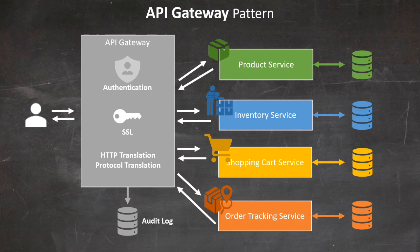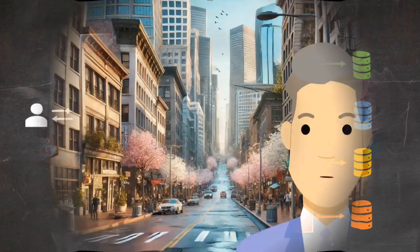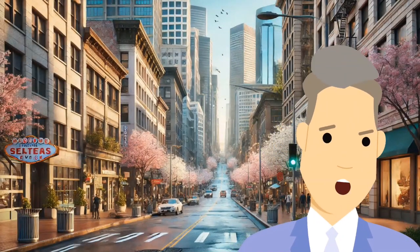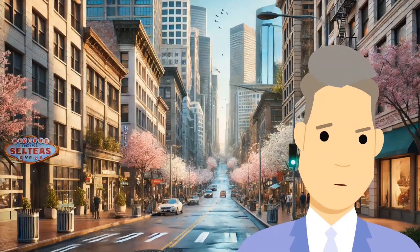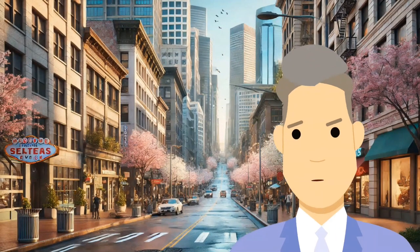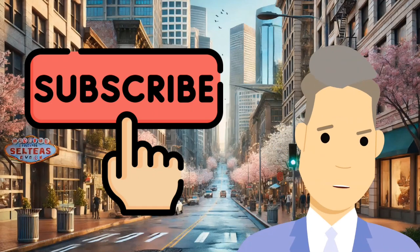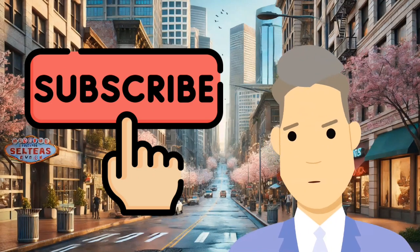If you think about implementation options for this pattern, you can look at AWS API Gateway, Azure API Management, or Google Cloud Endpoints and Apigee Edge. That's all for today — hit the like button, subscribe, and I'll see you soon.